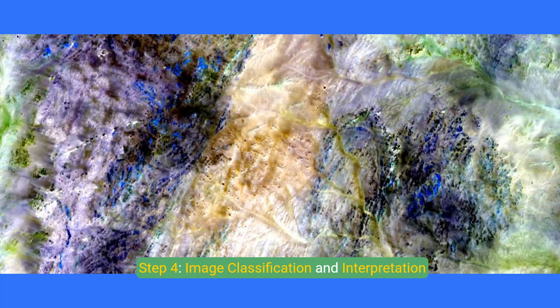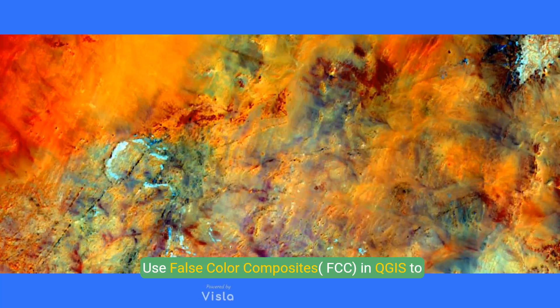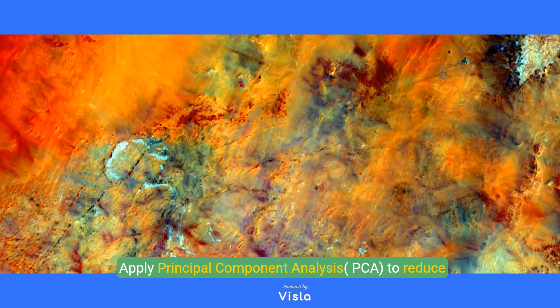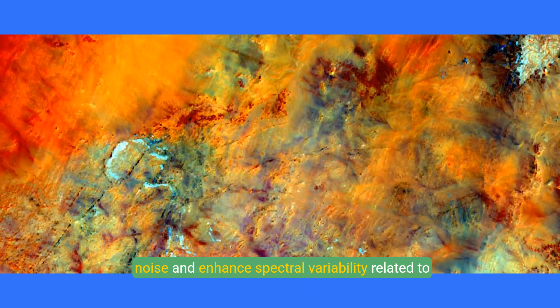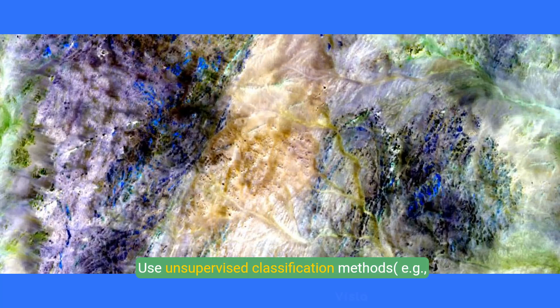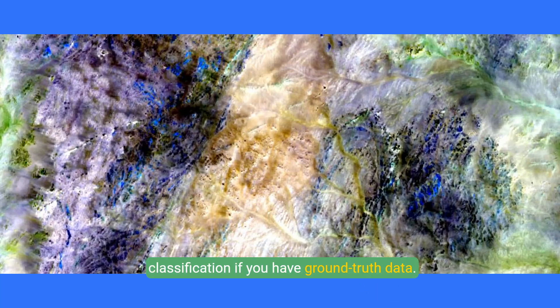Step 4: Image classification and interpretation. Use false color composites (FCC) in QGIS to visualize alteration zones by assigning SWIR 1, NIR, and Red bands to RGB for hydrothermal alteration zones. Apply principal component analysis (PCA) to reduce noise and enhance spectral variability related to alteration zones. Use unsupervised classification methods such as k-means or ISOCLUSTER, or supervised classification if you have ground truth data.